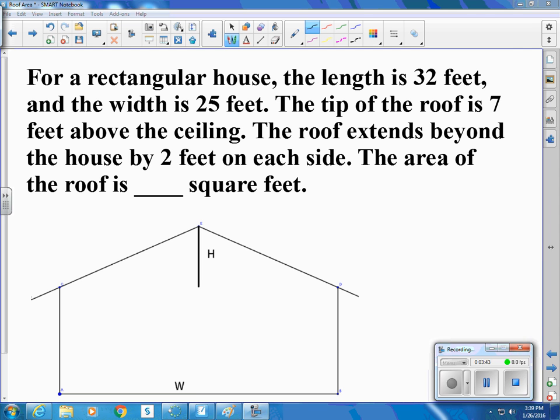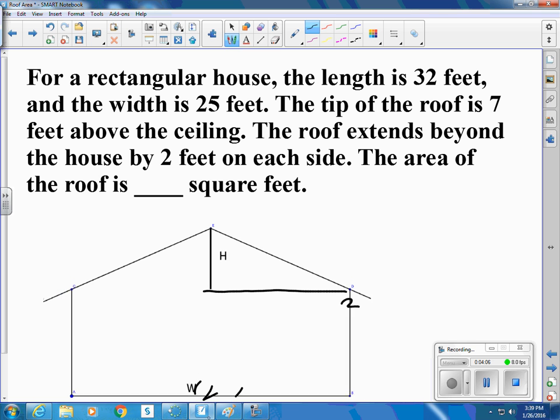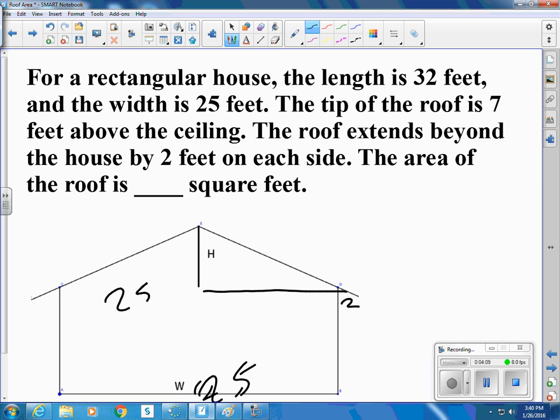Let's do another example. So we know this distance is 32. Oh, sorry. This one's 25. So here would be 12. So we have the 2 feet out here. Half of 25 is 12.5. So this right here will be 14.5. The height is 7.